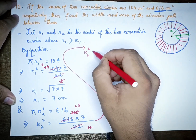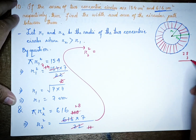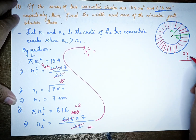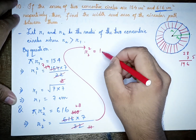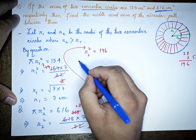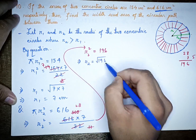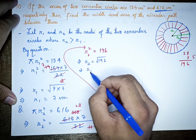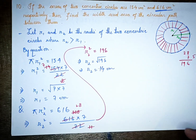r2² = 28 × 7 = 196. Therefore r2 = √196, which gives r2 = 14 cm.